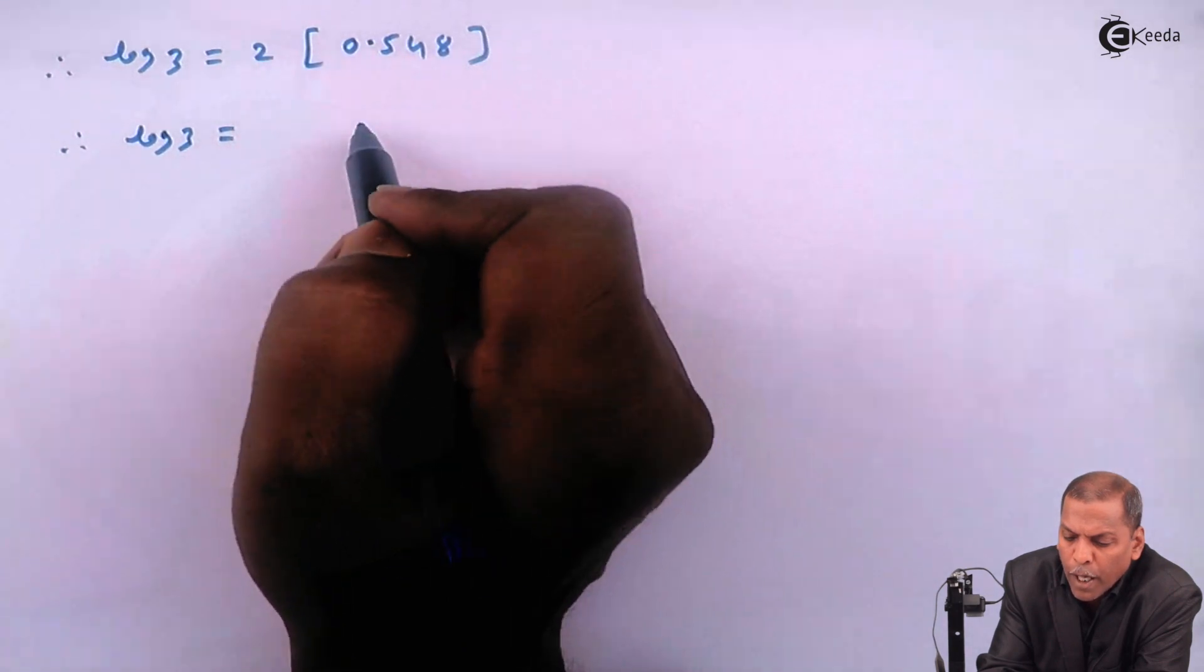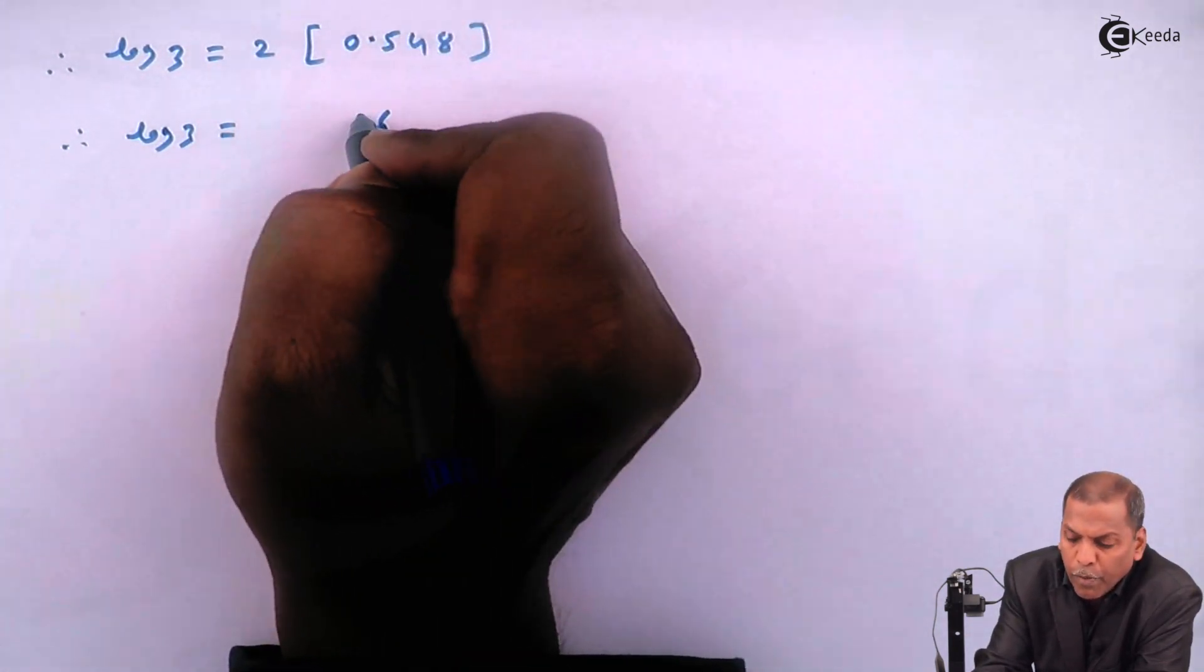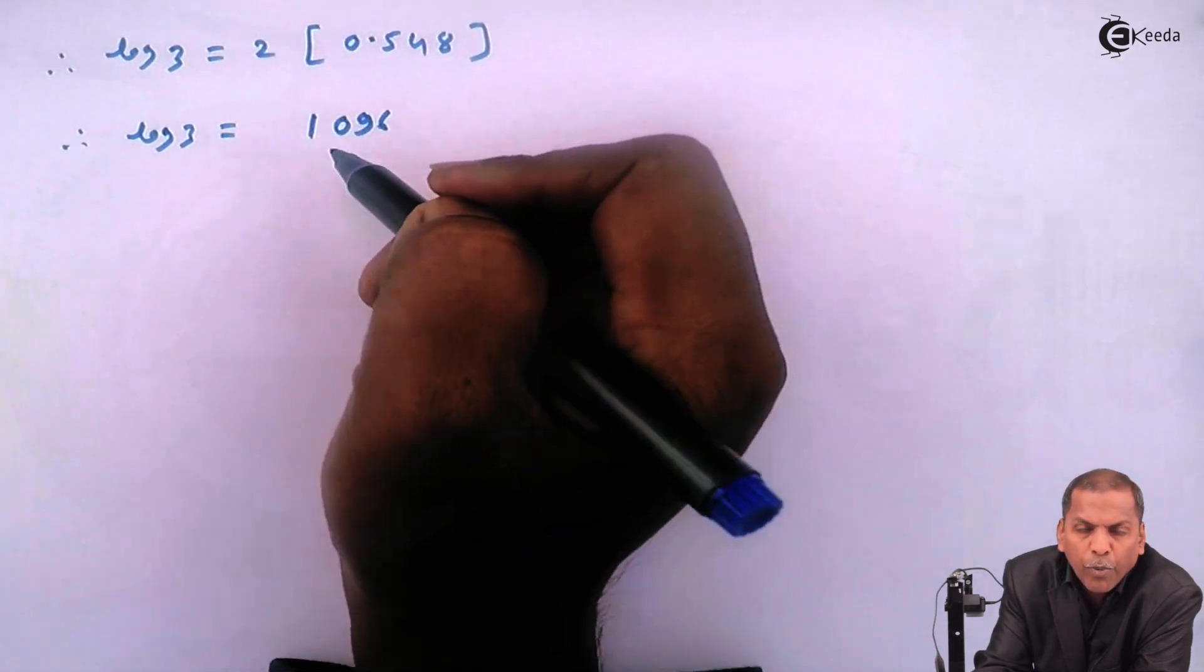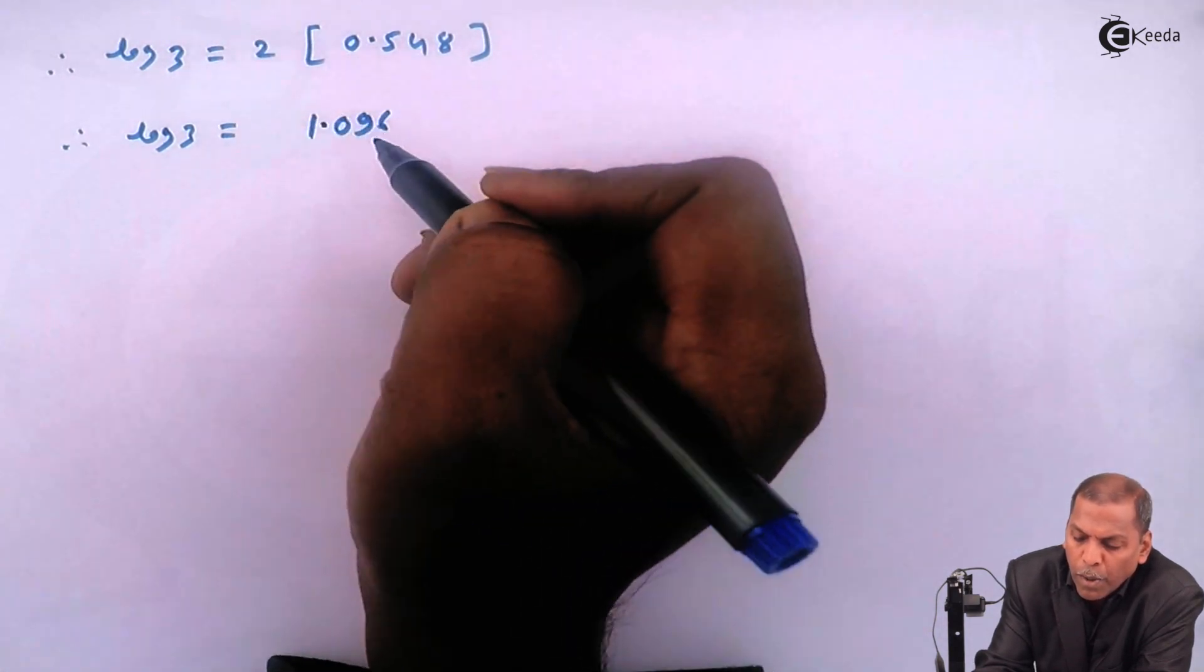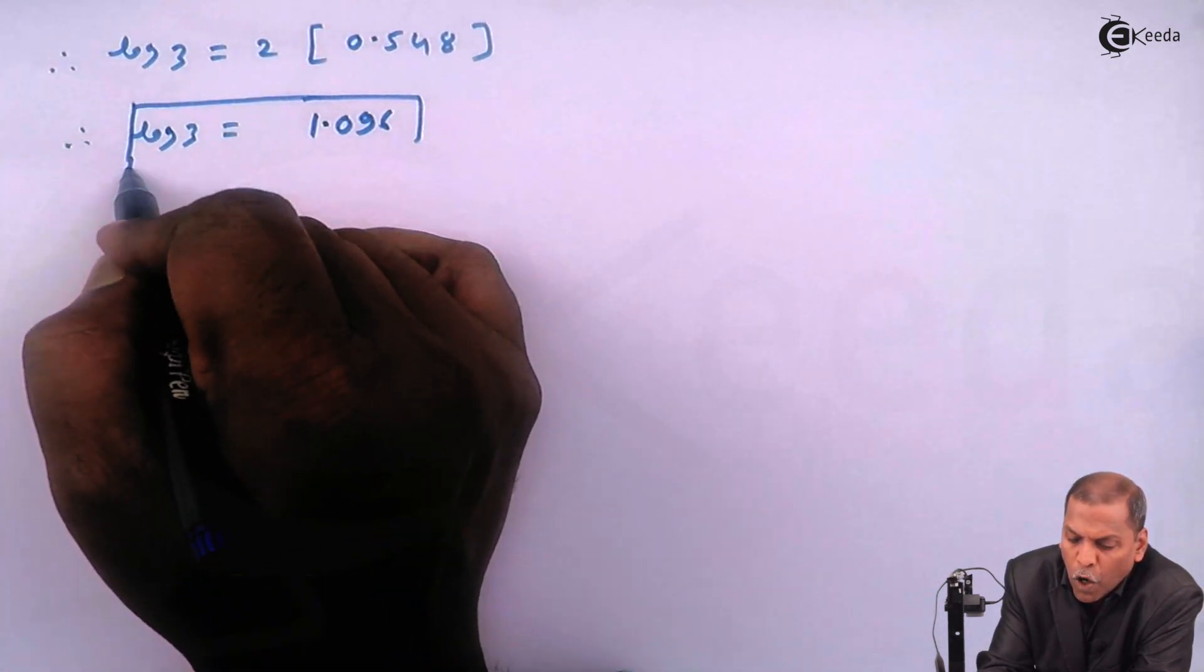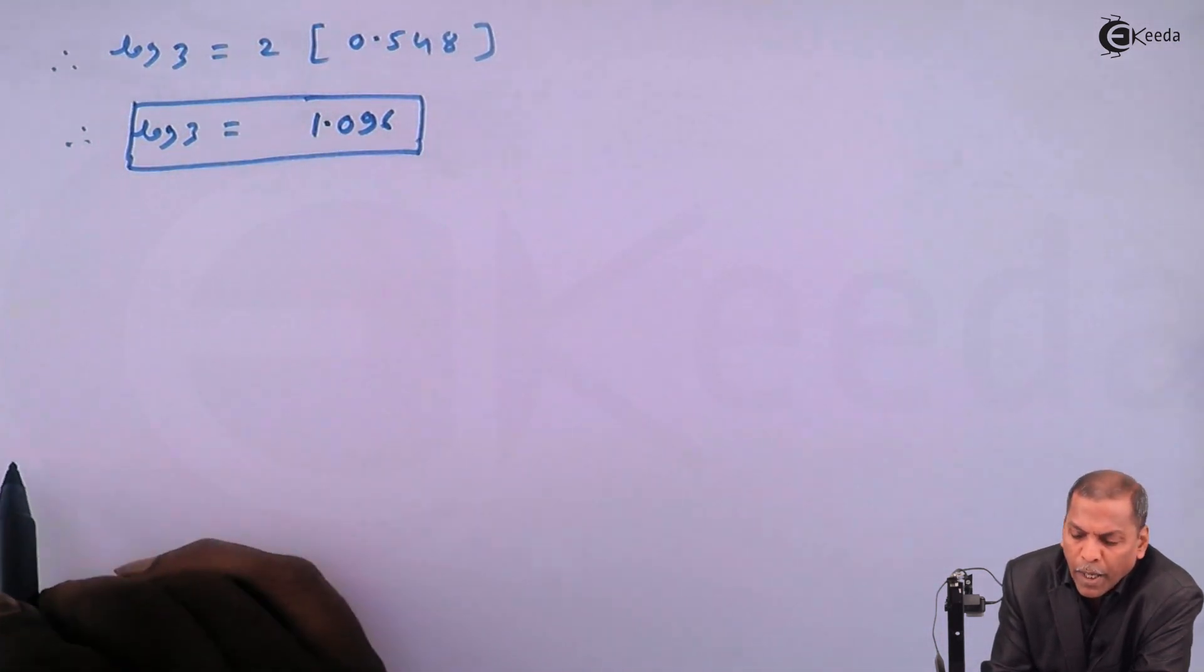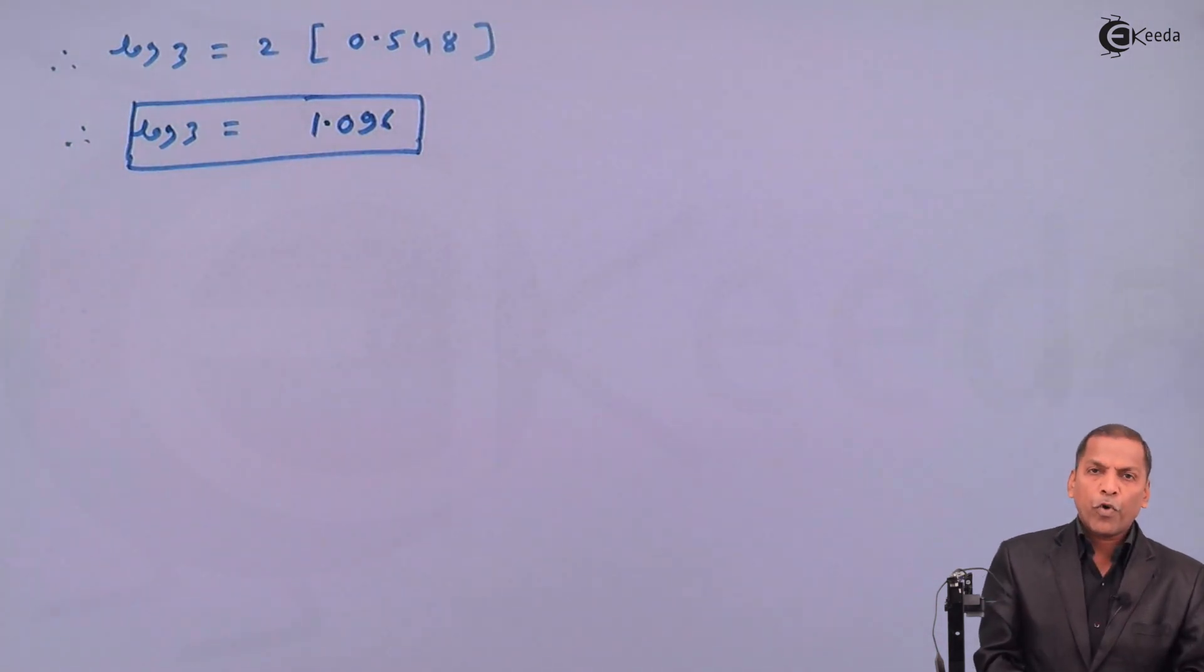Now, 2 × 0.548 equals 1.096 (calculating: 2×8=16 carry 1, 2×4=8+1=9, 2×5=10, with decimal after 3 digits). Therefore, log 3 = 1.096. This is the required solution. Thank you.